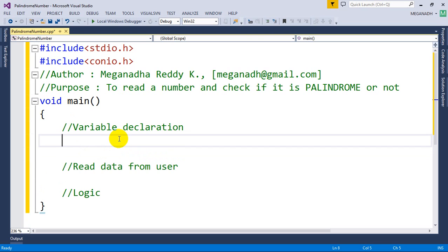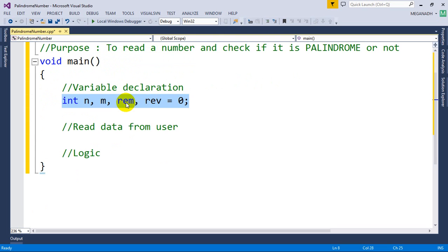We need to know what are the variables that we need. First int n value, that's the value that we read from the user, m value for taking the backup, and we need a remainder, and we also need reverse of the number so I'm going to put reverse is equal to zero. We declared these variables and we'll see if we need any other variables we'll add it later. Now let's read the value from the user.